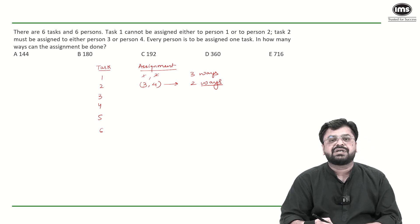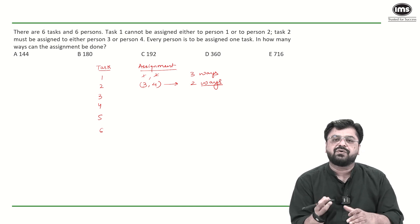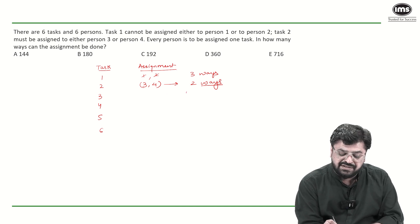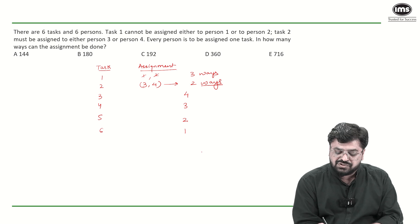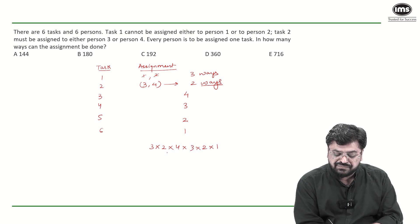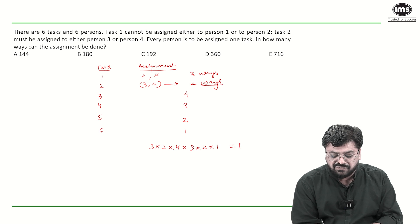Now for the remaining 4 tasks there is no restriction. So there are 4 tasks and 4 people, which means the remaining tasks can be assigned in 4, 3, 2, and 1 ways. So the total number of ways in which these tasks can be assigned is 3 into 2 into 4 into 3 into 2 into 1, which is 144.